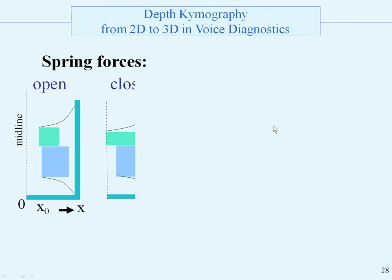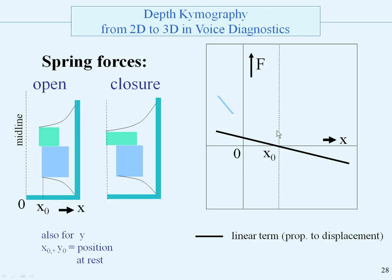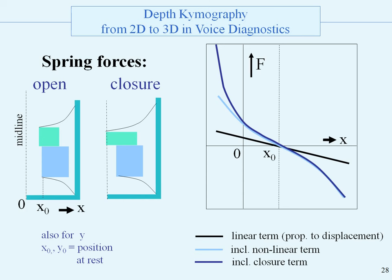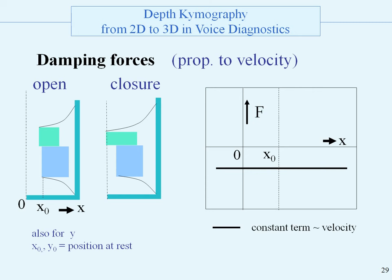There are several types of forces. First, the spring forces: in the open and closing situation they will be different. In the open situation there will be a linear term proportional to the displacement — Hooke's law — but also a non-linear term due to the non-elasticity of the material, which we need to produce vibrations. Upon closure the non-linear term will be large because there will be no possibility to move over the closure position. The damping forces are proportional to velocity. When passing the midline the damping will be much larger, creating a singularity when the blocks are touching each other — we decided to smooth this a little bit.